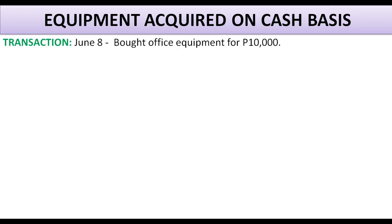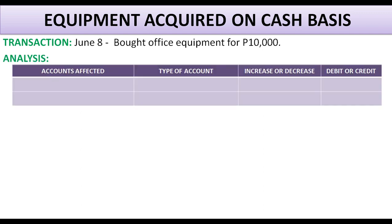Let us have this transaction: equipment acquired on cash basis. June 8, bought office equipment for 10,000 pesos. Let us analyze the transaction. In my previous videos, I already discussed how to analyze transactions. You are going to answer four questions.